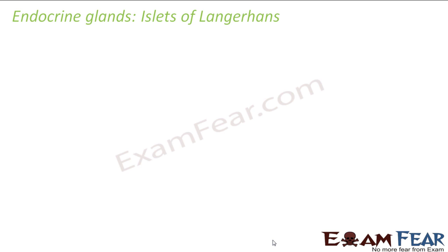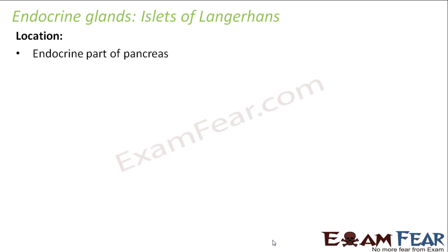Let us look at the next endocrine gland: the islets of Langerhans. This is the endocrine part of the pancreas, which I discussed in a previous slide. The pancreas has a portion that secretes its hormones directly into the blood, and this endocrine part of the pancreas is known as the islets of Langerhans.